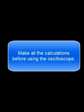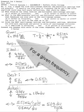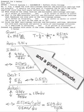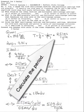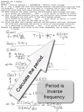Make all the calculations before using the oscilloscope for a given frequency and a given amplitude. Remember that amplitude is the voltage from 0 to peak, not peak to peak. Calculate the period. Period is inverse frequency.